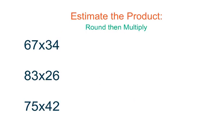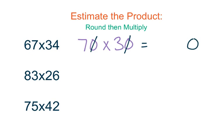Here we're estimating the product. We need to remember our two steps: first, round our numbers, and then multiply what we rounded. We're going to start with 67 times 34. I'm going to round 67 up to 70, and 34 rounds down to 30, so my multiplication problem is 70 times 30 to find my estimate. I cross my zeros out, place them in my product. 7 times 3 is 21, so my estimate is 2,100.